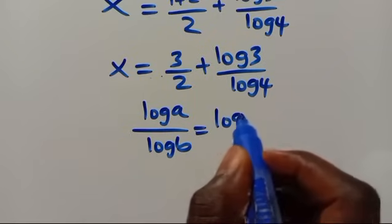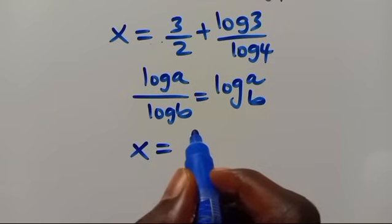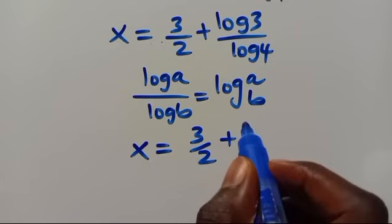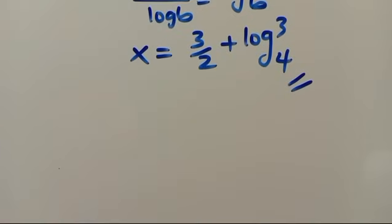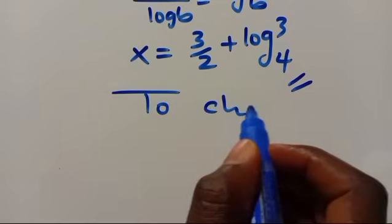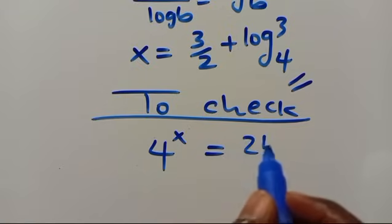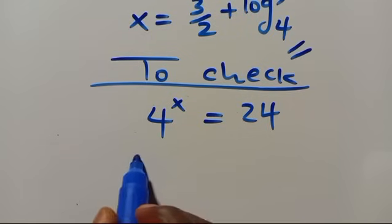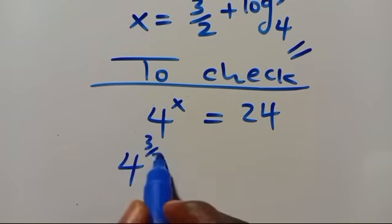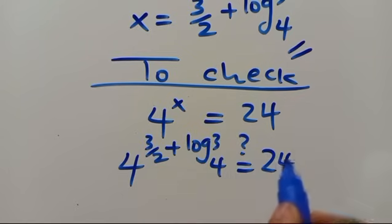Since log A over log B equals log A in base B, we have X equals 3 over 2 plus log 3 in base 4. This is the value of X. Let us verify by checking: 4 to the power of X equals 24. Substituting X equals 3 over 2 plus log 3 in base 4 into 4 to the power of (3 over 2 plus log 3 in base 4) should give us 24.